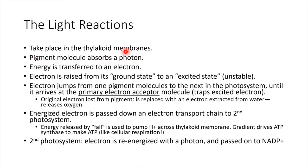A photon is just a little packet of light energy. So the pigment molecule absorbs some light, and that energy helps to energize an electron. That electron gets excited — it's raised from a ground state to an excited state, which just means its energy level increases. And that's unstable, that's kind of like the hot potato, the same idea as in cellular respiration. If you have an excited electron, molecules tend to hand that off as quick as they can.